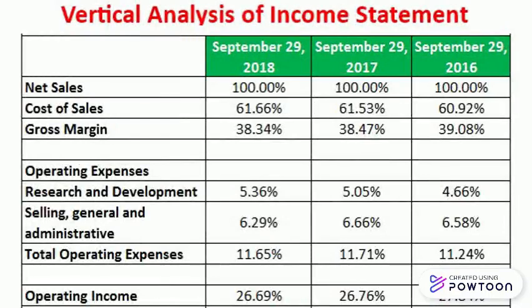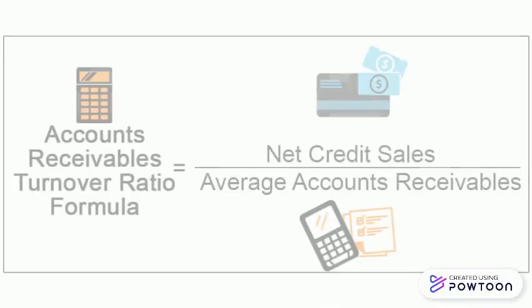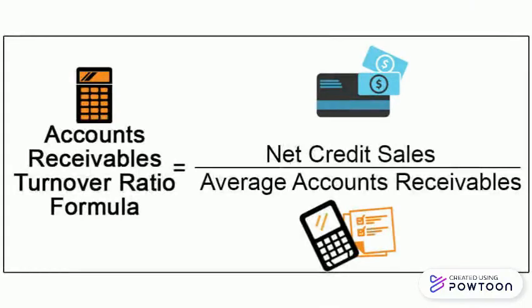As you can see in this slide, there are two examples of horizontal and vertical analysis. One form of ratio analysis used to assess the management of receivables is the receivables turnover ratio, which compares the company's credit sales during a period to its average receivable balance during that period. It is calculated using this formula.